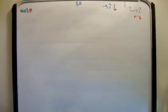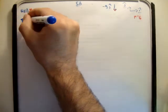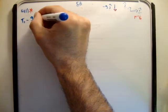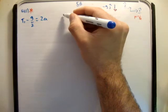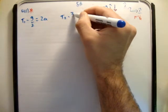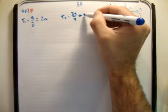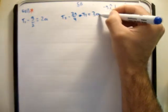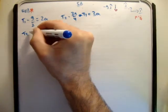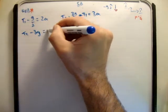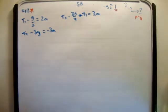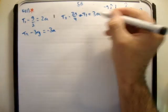So the 3 formulas which we had, were as follows. We had t1 minus g over 2 is equal to 2a. We had t2 minus 3g over 4 minus t1 is equal to 3a. And we had t2 minus 3g is equal to negative 3a. And I'd label them 1, 2, 3.